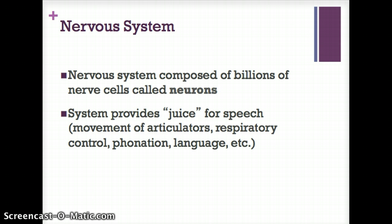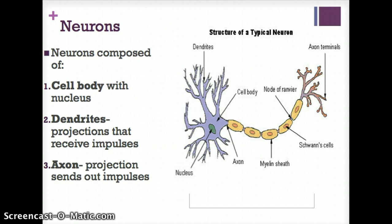Our nervous system is composed of billions of nerve cells called neurons, and these provide the passageway for speech. Movement of articulators, respiratory control, phonation, and language — all of it is controlled by neurons. Our focus today is on communication.